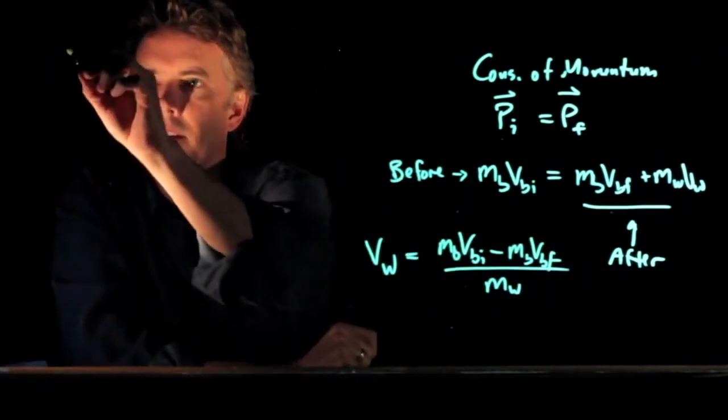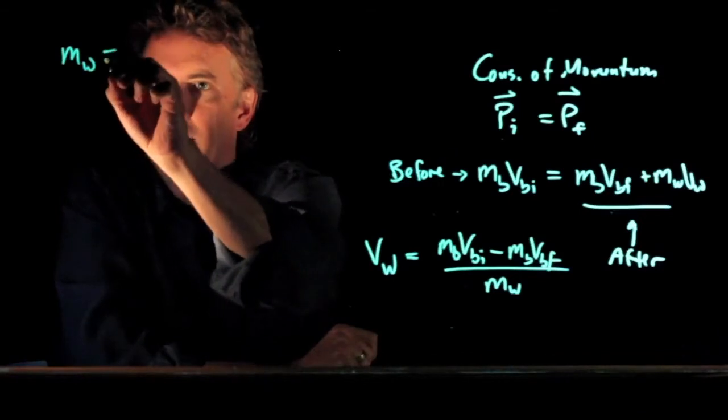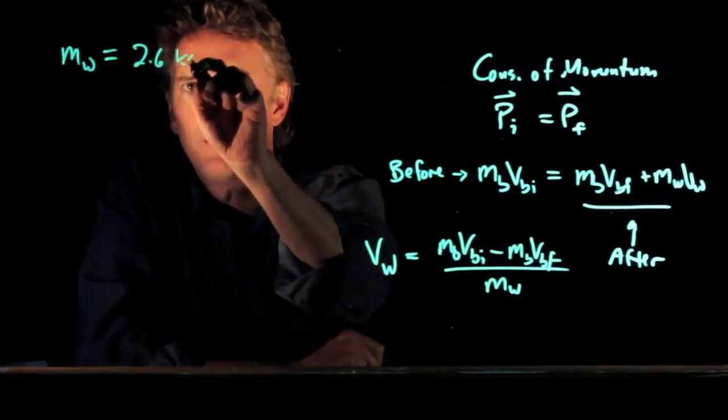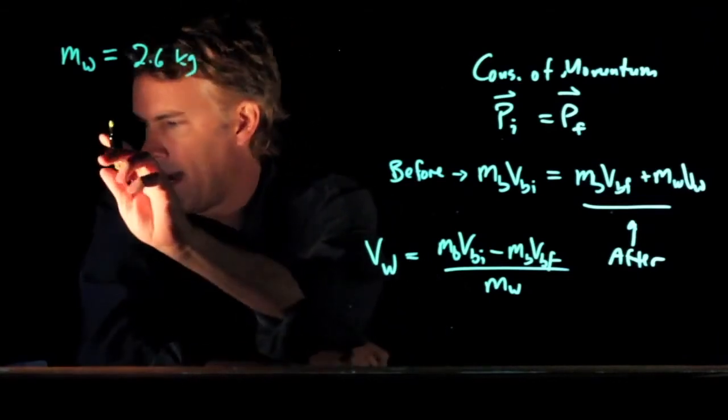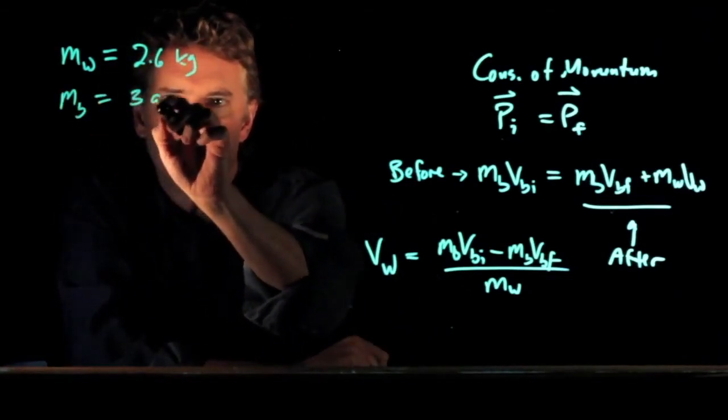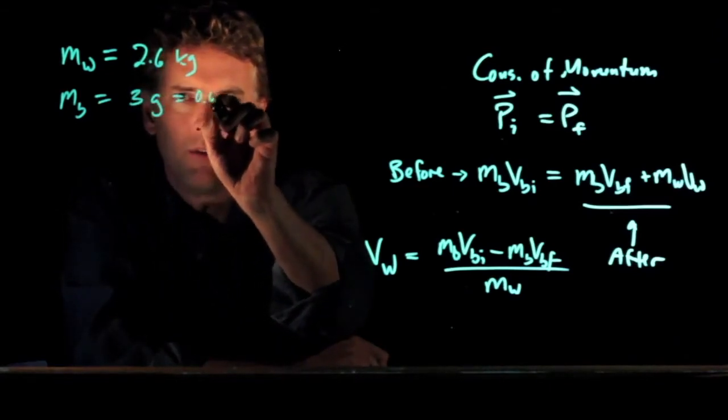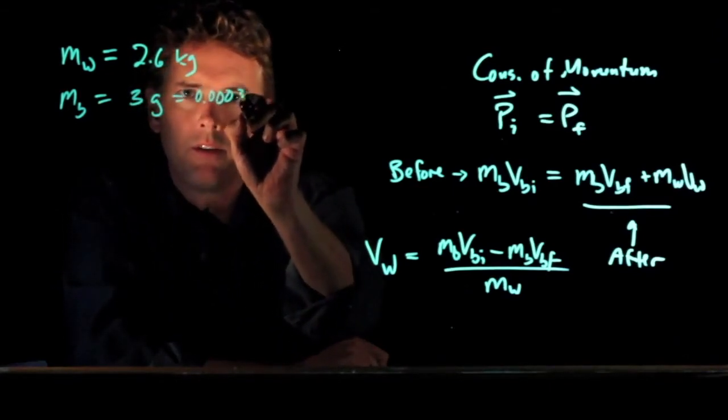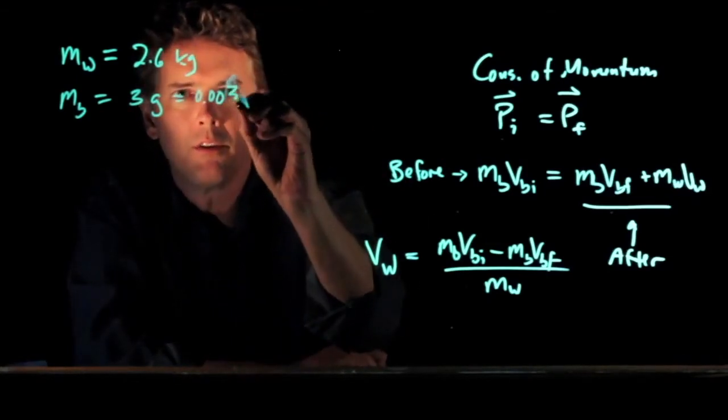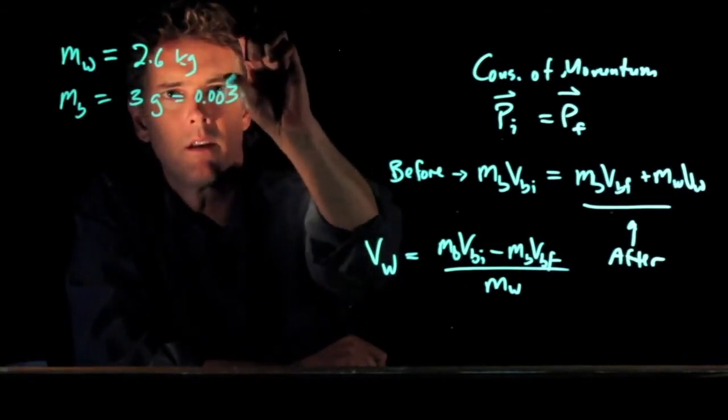Okay, so let's say that the block, the mass of the wooden block, is 2.6 kilograms. The mass of the bullet is 3 grams, which is 0.003 kilograms.